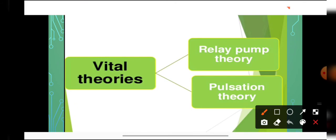Regarding vital theories: first was the relay pump theory given by Godlevisky, who said that it is the xylem parenchyma — which is living — that is responsible for ascent of sap. Second was the pulsation theory given by J.C. Bose, who said that the cortical cells are responsible for ascent of sap. But vital theories were heavily criticized because if the living cells are killed, ascent of sap still continues. This means living cells are not responsible for ascent of sap, and so vital theories were discarded.